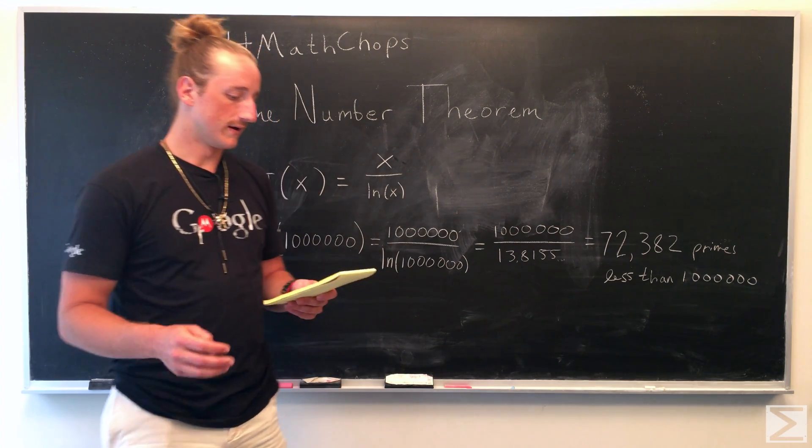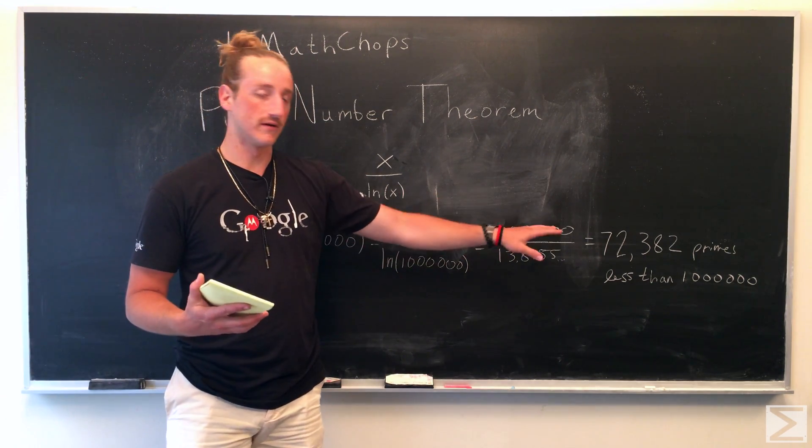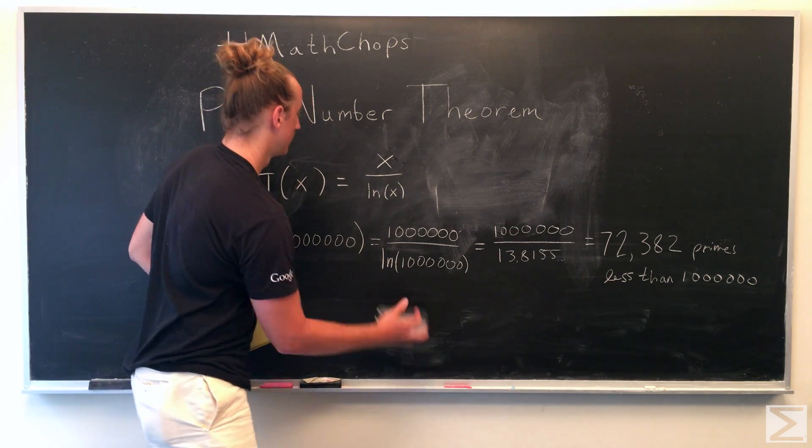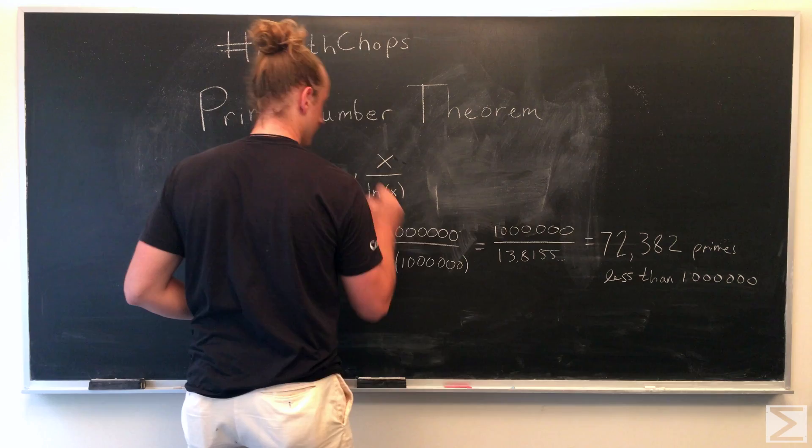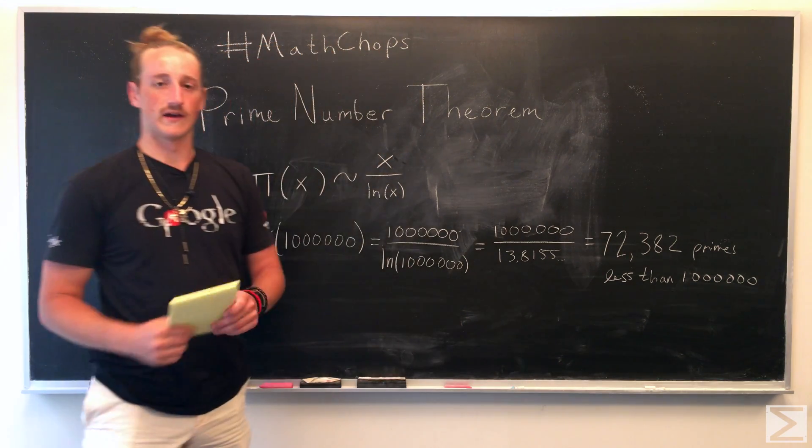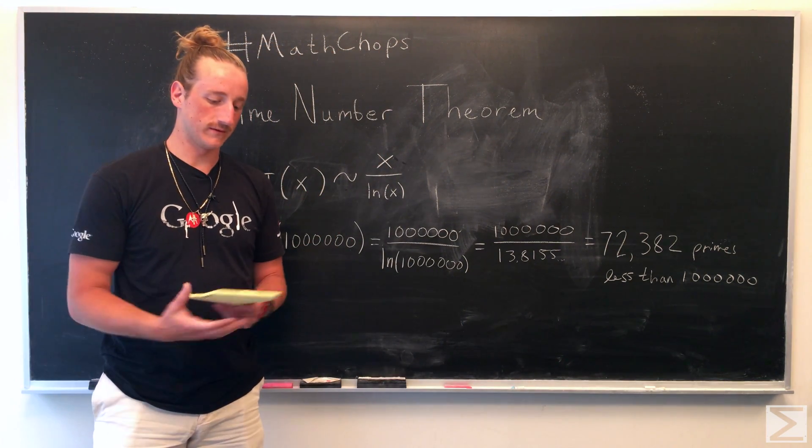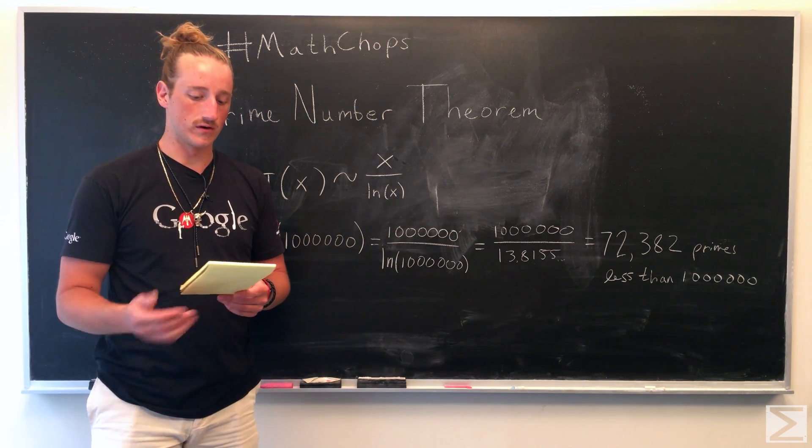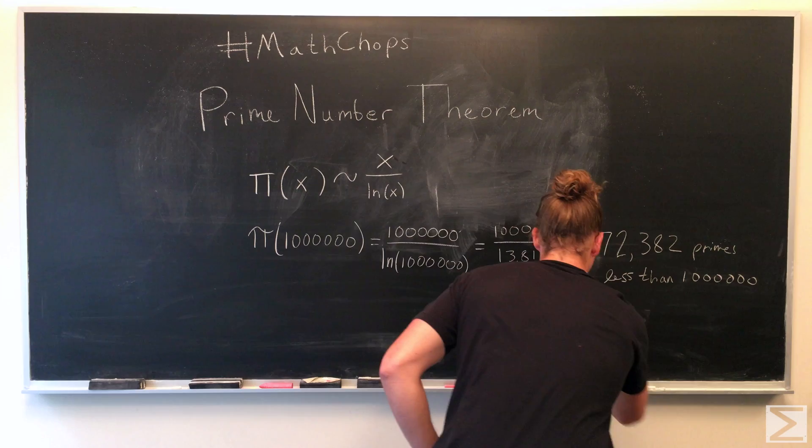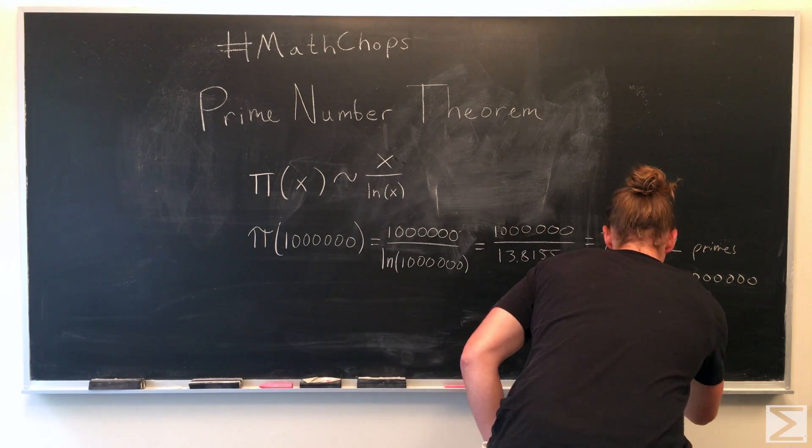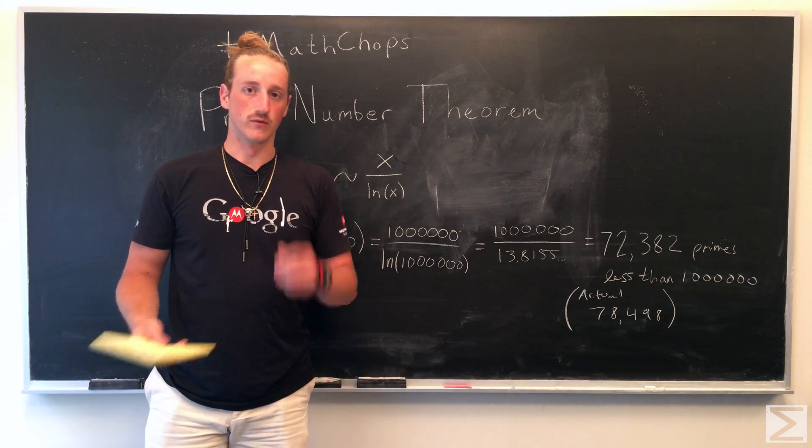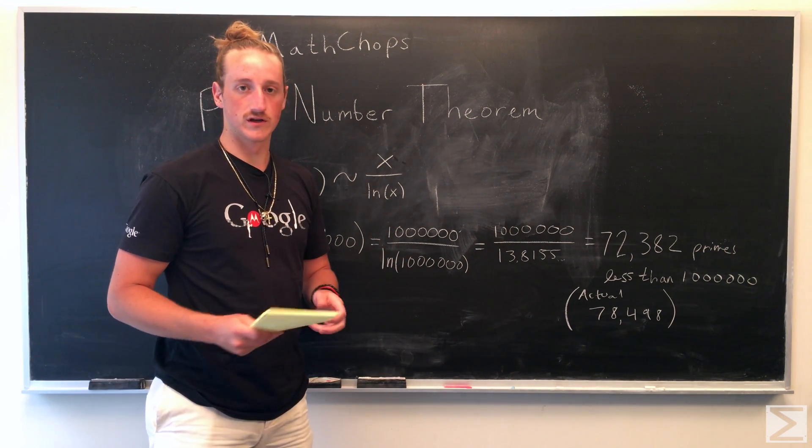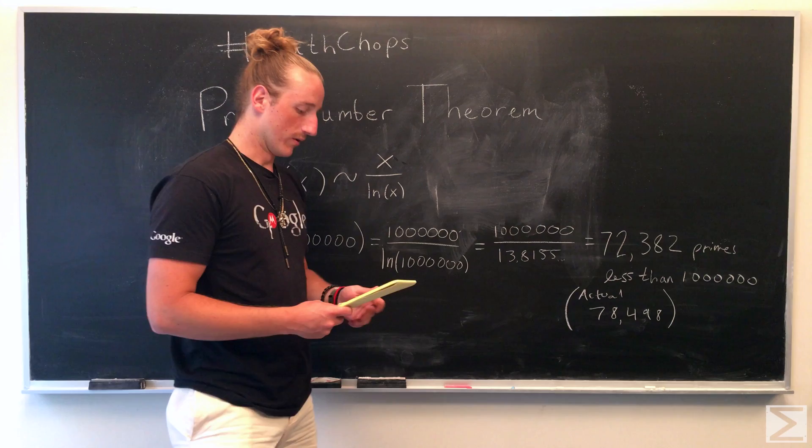And the actual number of primes - this is an approximation, remember. I should probably correct that. It's not an exact number, so this tilde represents an approximation. So the actual number is 78,498. And to find this actual number, you would find that by counting. So mathematicians did it through the years, and that's what they found.